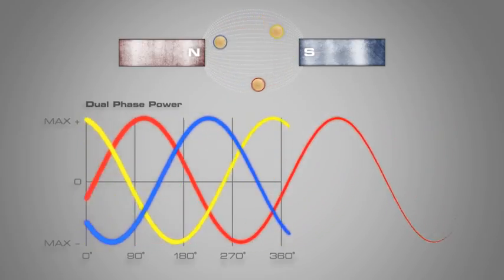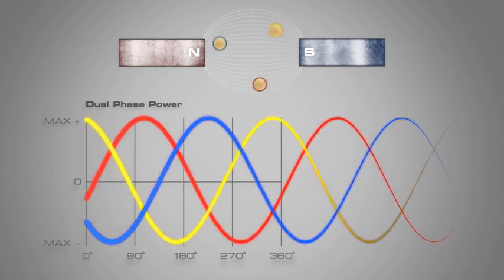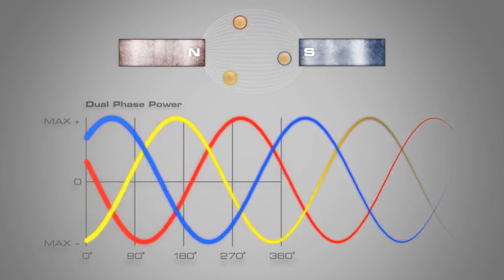By adding a third sine wave, or phase, and having them equally apart from each other at 120 degrees, there are minimal points in time when the power output is low.